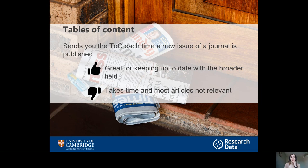Something else you can do is set up alerts for tables of contents. Go to the journal website and set up an alert so that every time there's a new issue, the whole list of articles in that issue will be sent to your inbox. It's a great way to keep up to date with the field as a whole because you'll get a broad range of articles — some directly relevant to you, others of passing interest, and others not relevant at all. But it's good to have a bird's eye view of the field. Again, don't do too many because it does take time to go through the list of articles and you don't want to feel overwhelmed.